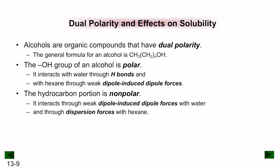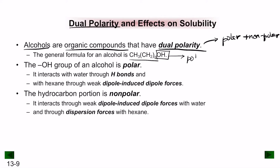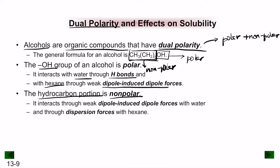Some molecules have dual polarity — they can act as both polar and non-polar. Alcohols are the best example. The general formula of an alcohol has a carbon chain attached to an OH group. The OH group is the polar part and the carbon chain is the non-polar part. The OH group can form hydrogen bonds with water and weak dipole-induced dipole forces with hexane, while the hydrocarbon portion interacts through dispersion forces with hexane and weak dipole-induced dipole forces with water.